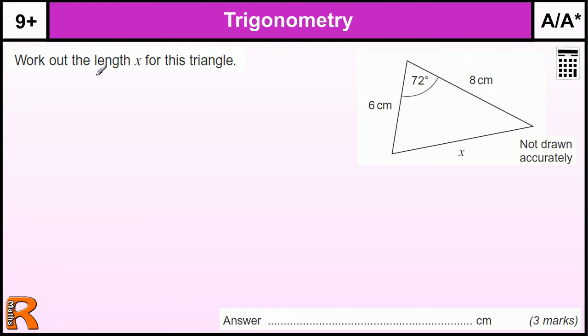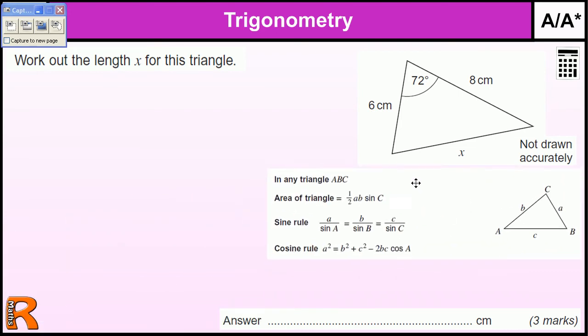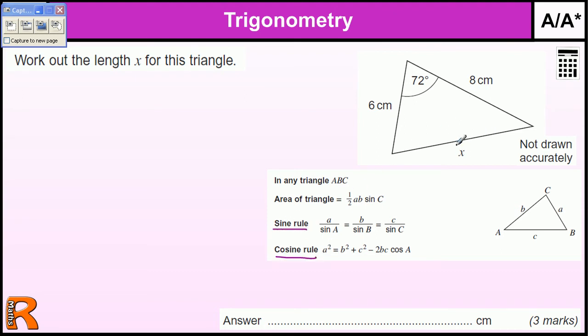So, working out the length of x of this triangle, we're going to need the rules, so we're going to bring those in for trigonometry in any triangle. Now, when we're looking at a triangle and we're trying to decide whether it's going to be the sine rule or the cosine rule, because we're trying to find a length or an angle, then we're looking for how many sides are involved and how many angles.